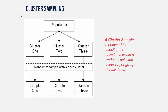Then there's cluster sampling, which is a lot like stratified sampling. A cluster sample is obtained by selecting all individuals within a randomly selected collection or group. Sticking with the homeroom idea — you have your population of high school students, and each cluster represents a different homeroom. You would randomly select cluster 1, cluster 2, and maybe cluster 100. So rather than a few from each cluster, you take all the people in each of a few randomly selected clusters.